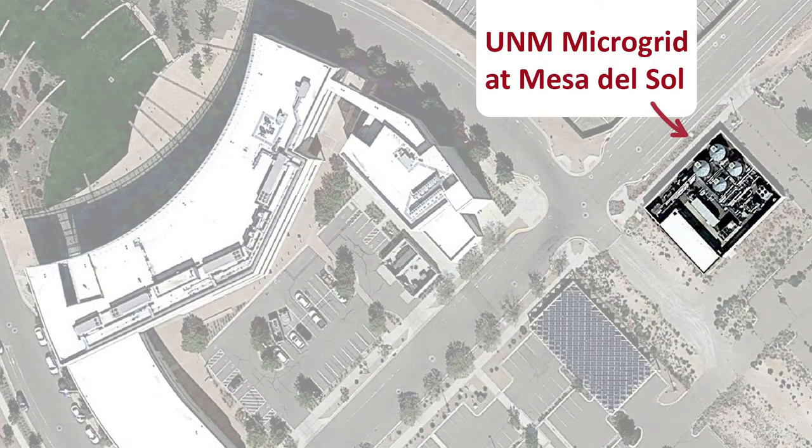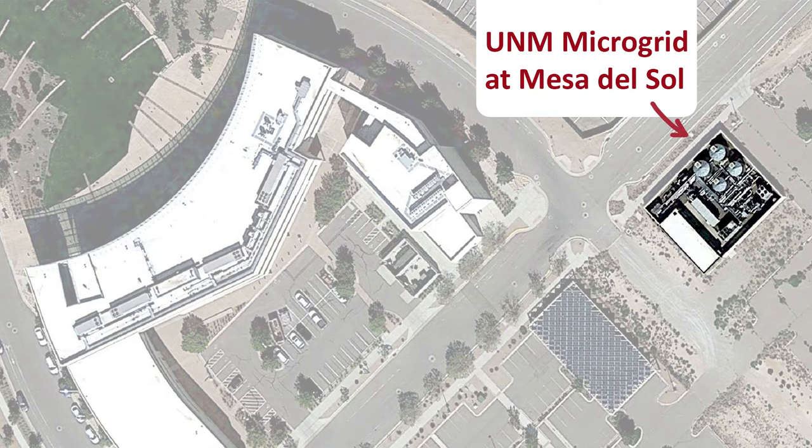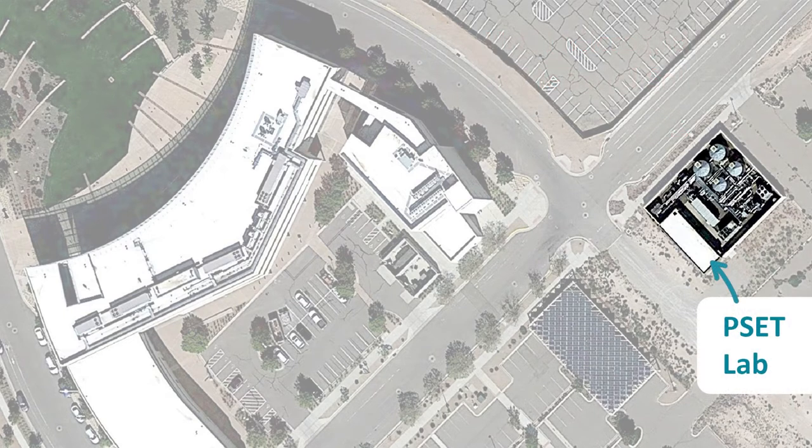The power systems and emerging technologies lab is located over at the Mesa del Sol's microgrid, and it is actually in our electrical room. So you're able to work with the simulations on our hardware in the loop system.